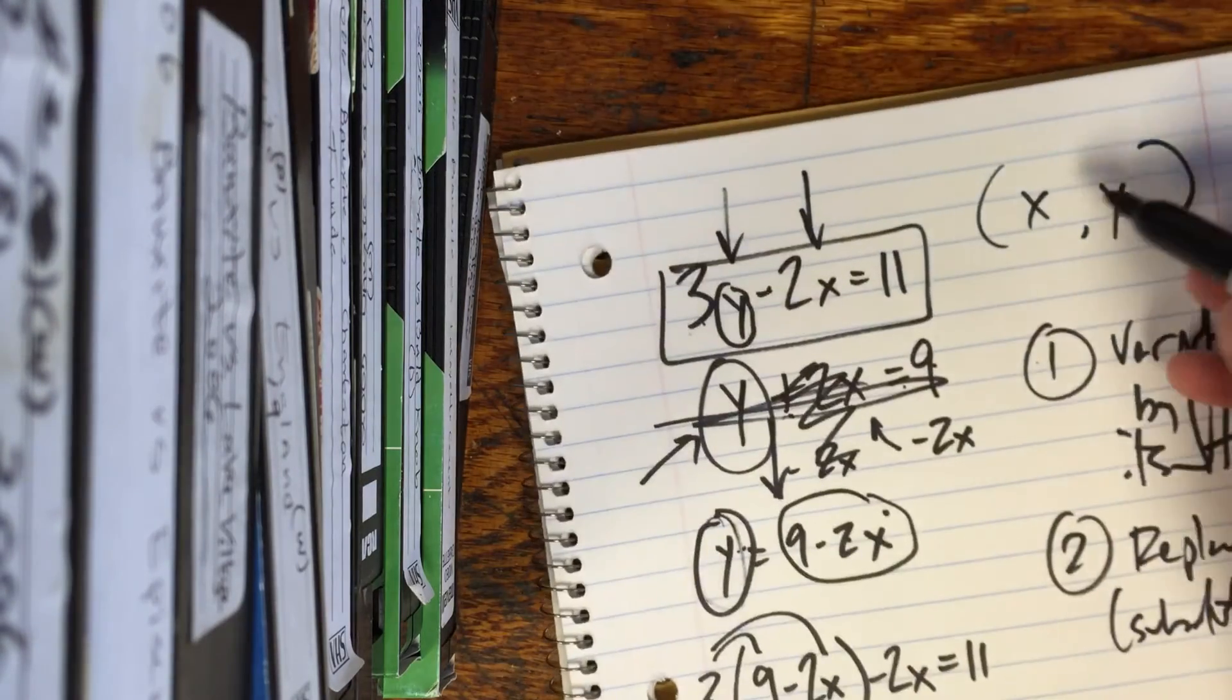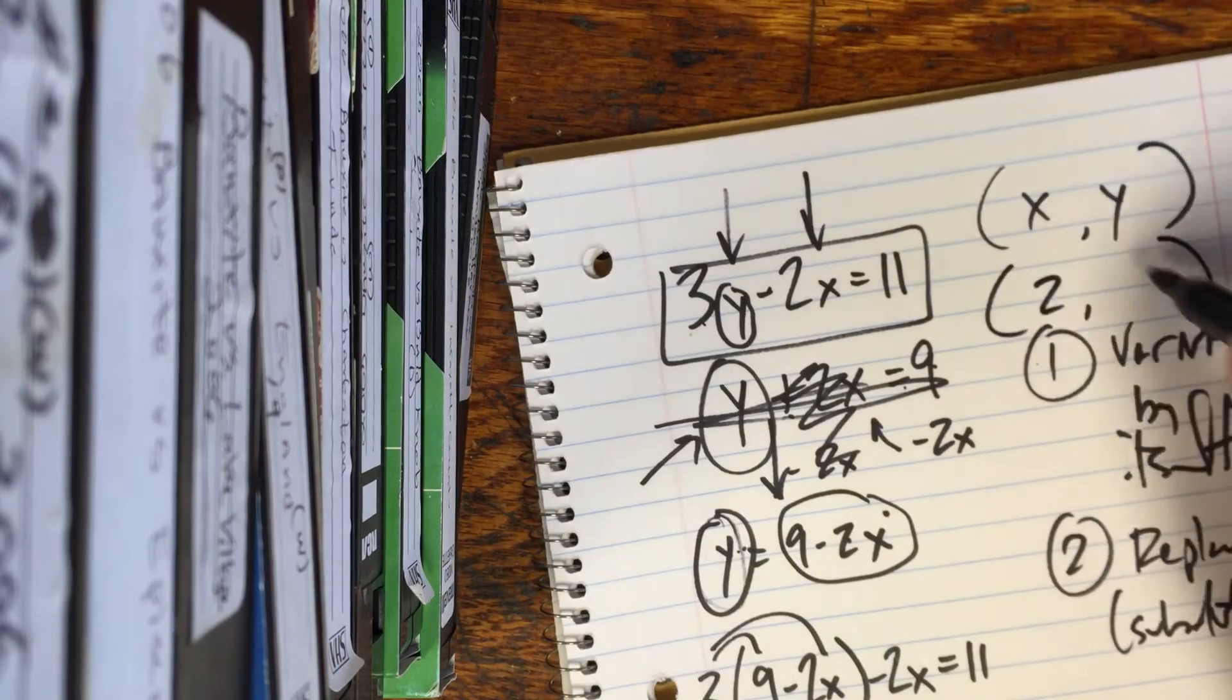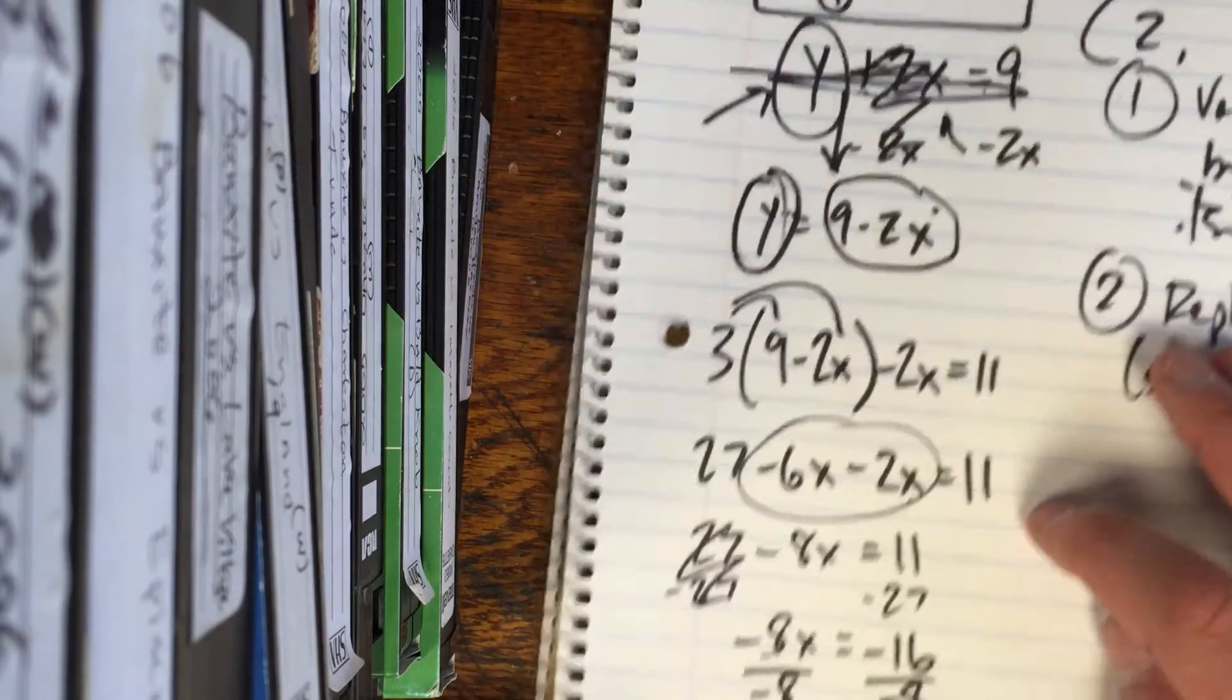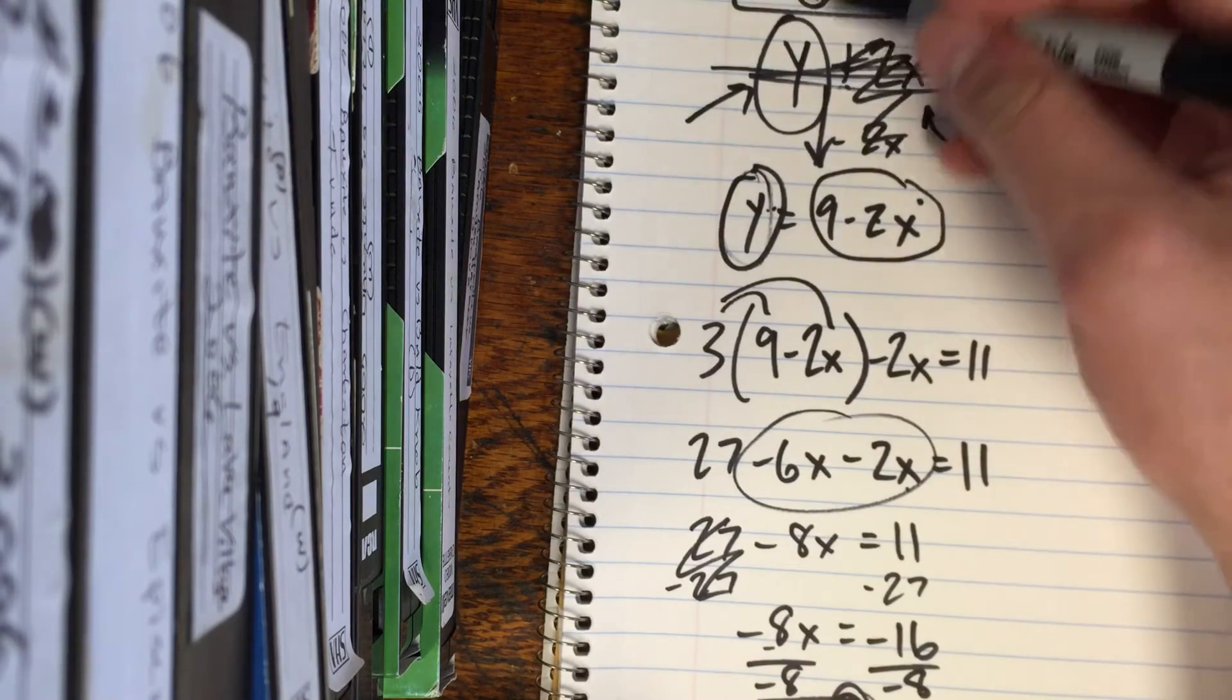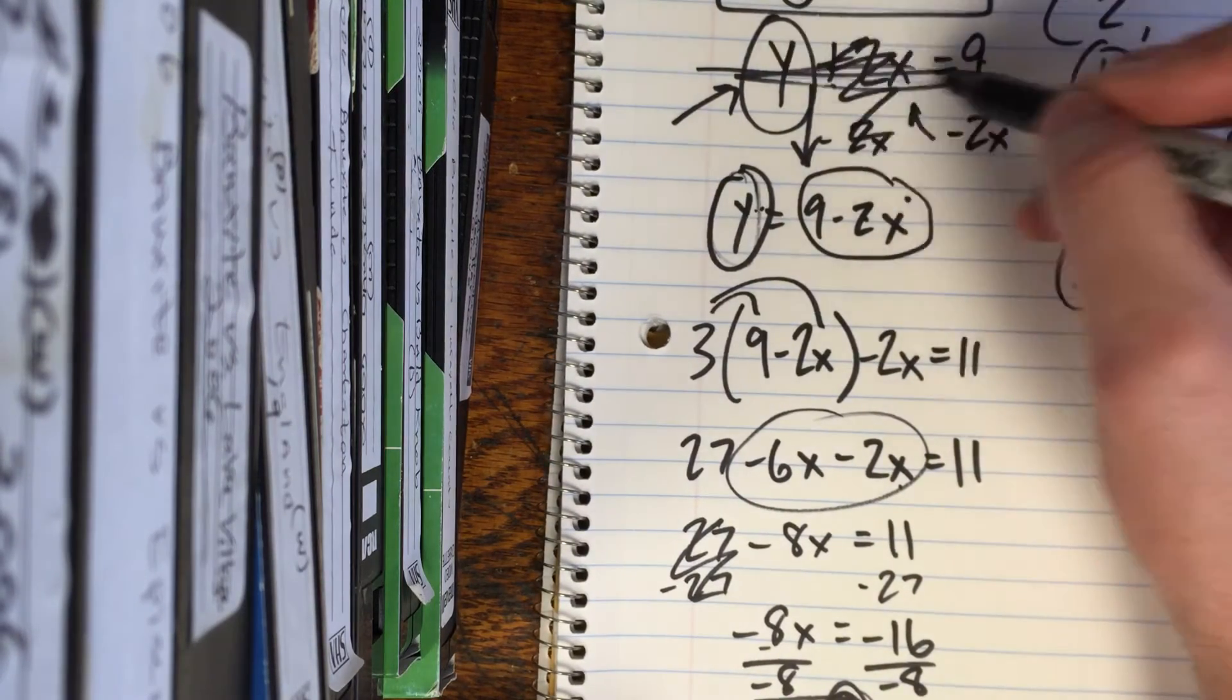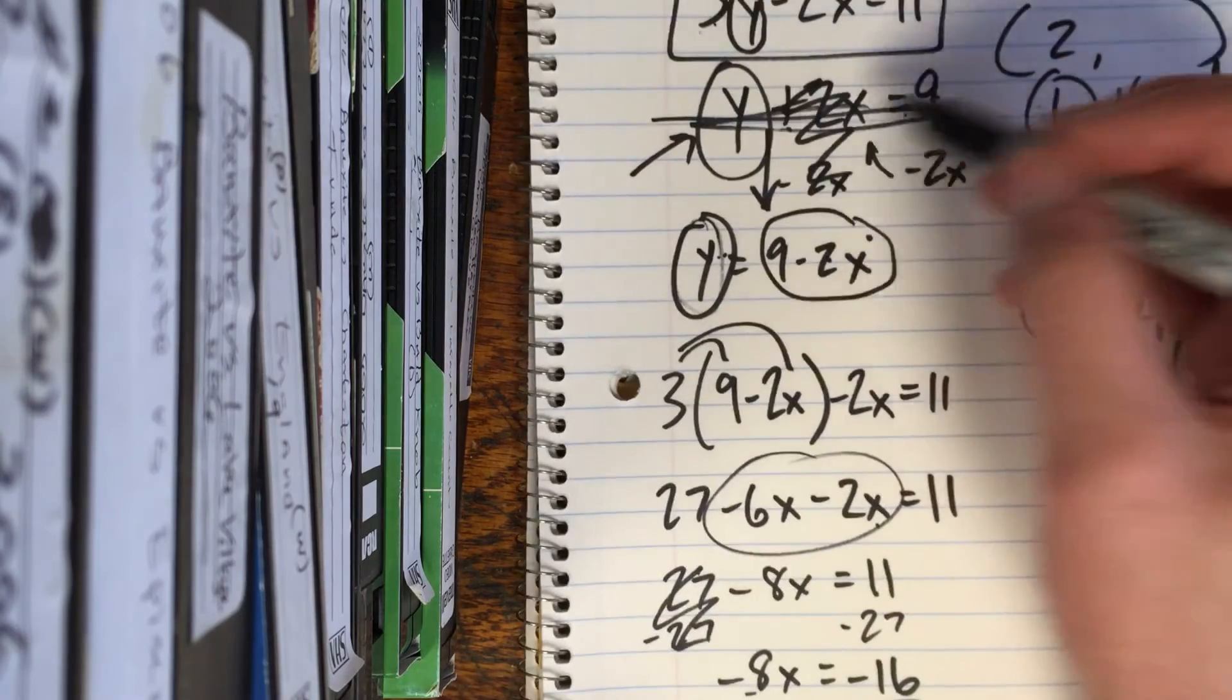Now you found half of this little guy. We found our 2. We've got to find the other half, and that's actually the easy part. All we've got to do is plug that 2 in and substitute it in for an x out of either equation. Let's use our other one. I like to switch it up. Let's use this other one.